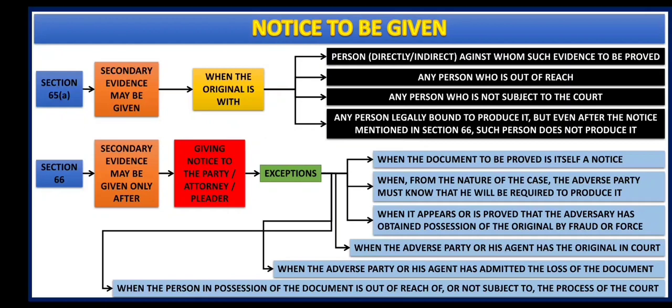And lastly, any person legally bound to produce it. Now this original is with Mr. XYZ who is legally bound to produce it in front of the court, and he has already been served notice as mentioned under Section 66. Even after giving notice, if such person is not producing the original evidence, in that case secondary evidence may be given. These are the four places where if the person having the document is not giving it to the court, secondary evidence is okay.